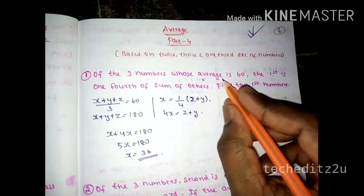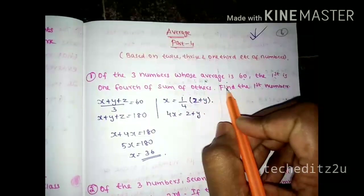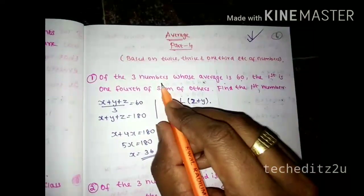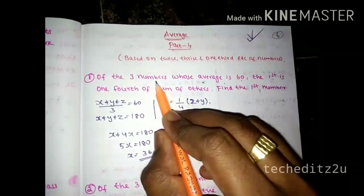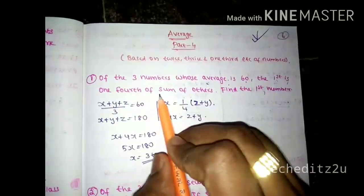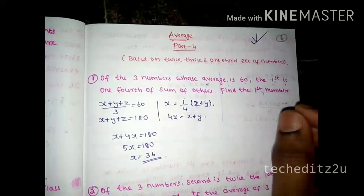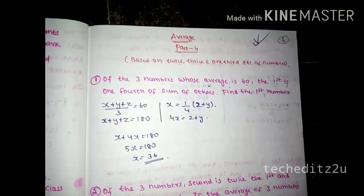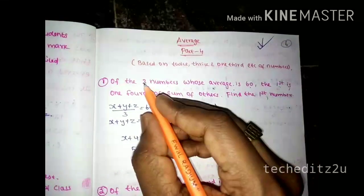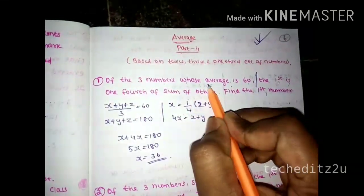Of three numbers whose average is 60, the first is one-fourth of the sum of the others. Find the first number. There are three numbers. If you look at the average, it is 60. The first is one-fourth of the sum of the others. The number is one-fourth times the sum. Let's check out the three numbers whose average is 60.